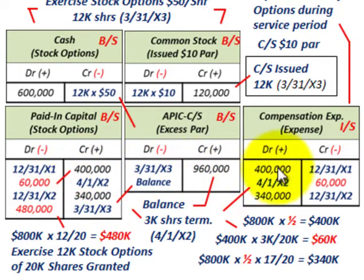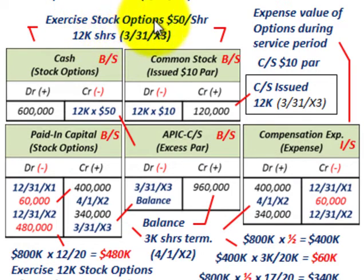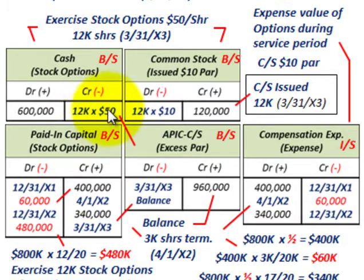We've taken care of recognizing compensation expense evenly over the two-year vesting period, and handled the 3,000 shares that were terminated by reducing our compensation expense. Now let's look at where the executives exercise their stock options. We're using the $50 per share option price, not the market price. On 3/31/X3, 12,000 shares were exercised. We debit cash for $600,000, based on 12,000 shares times the $50 option price.